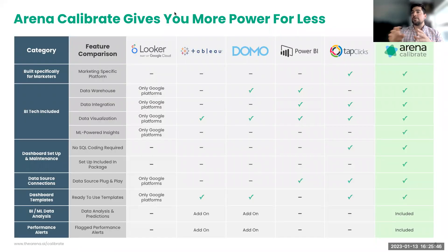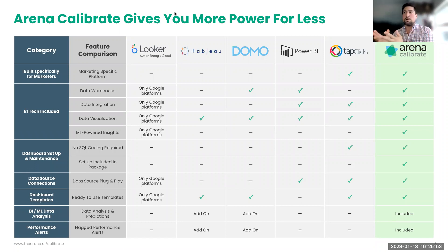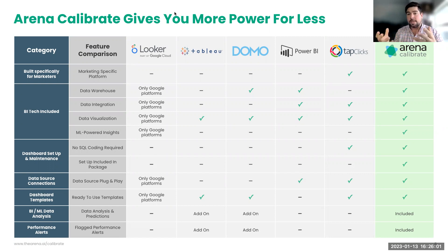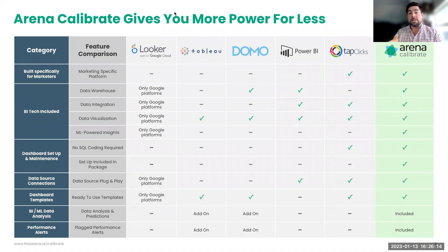In terms of comparison, there's Looker — formerly Google Data Studio — Tableau, Domo, Power BI, and TapClicks. They offer a variety of features that can be valuable, but they don't offer the full assortment of features that Calibrate provides. We've assembled the full spectrum of both tech and services to get you from point A to point B with really powerful analytics fast.